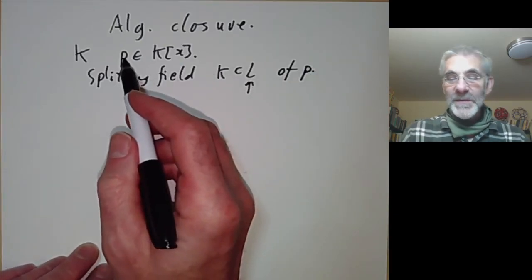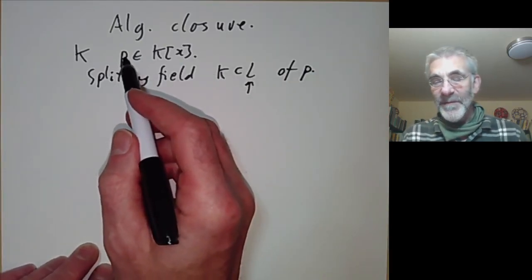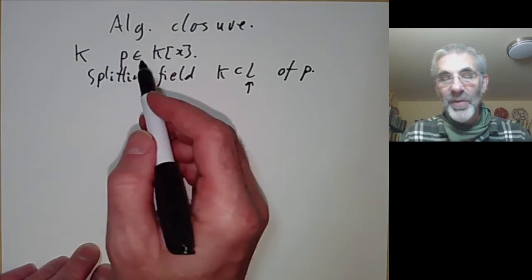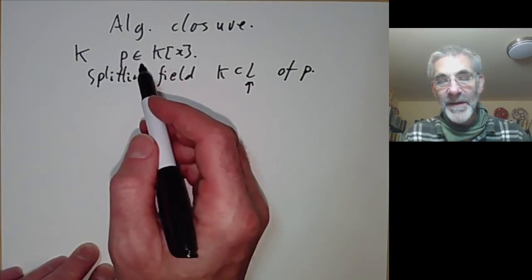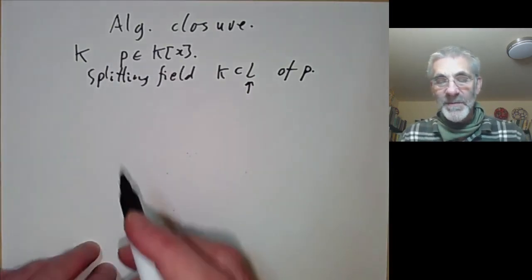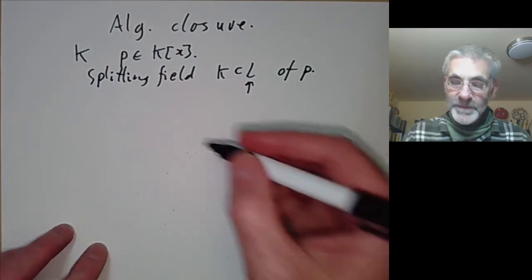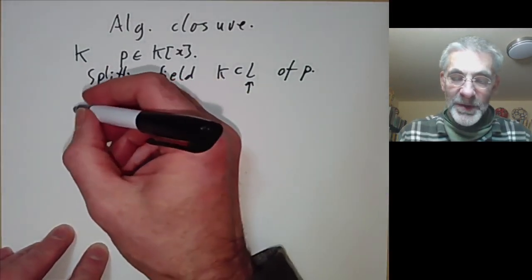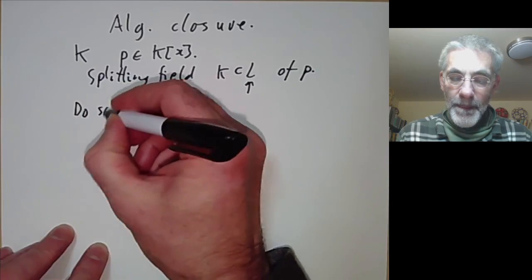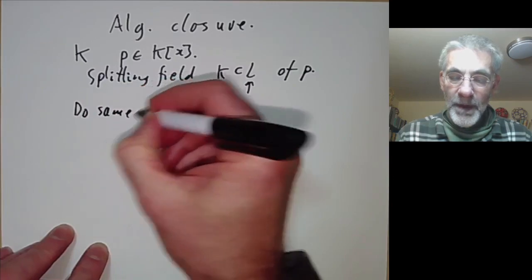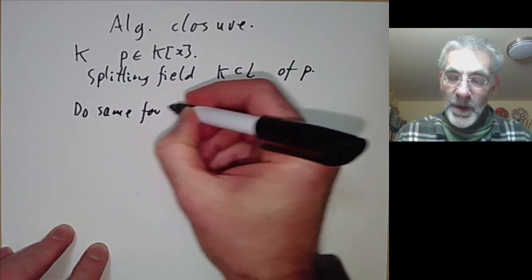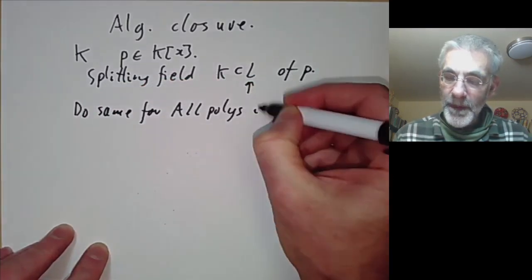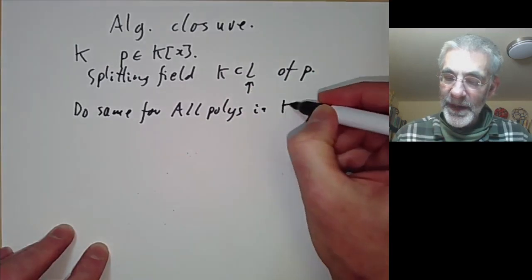We can obviously do the same thing with a finite number of polynomials p — we just multiply the polynomials together and take the splitting field of the product. Now what we can do is the same for all polynomials in k[x].